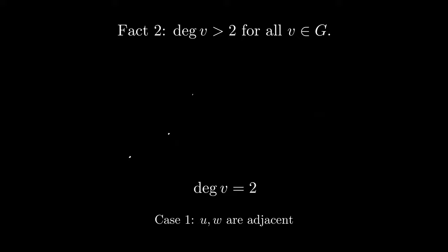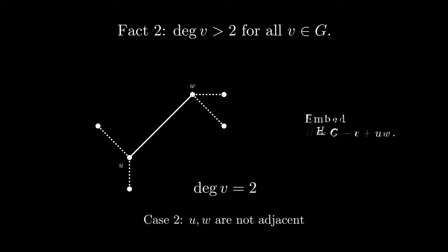If u and w are not adjacent to each other, then consider the graph h obtained by removing v from G and adding in the new edge uw. This graph has exactly one fewer edge than G, so it too must be planar. By subdividing the edge uw into uv and vw, we can again obtain a planar embedding of G. Thus, no vertex can have degree less than or equal to two.